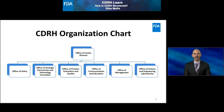This slide shows a high-level organizational chart for CDRH, current as of October 1, 2019. At the top of this structure, you'll find the Office of the Center Director. Six offices report to that center director. Let's review them all one office at a time.